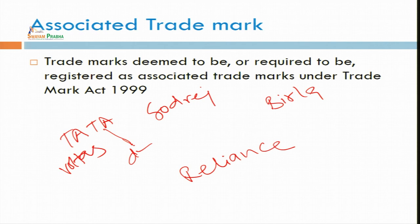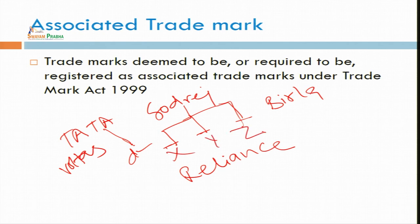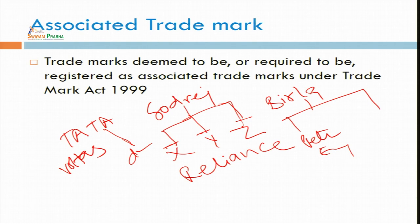Godrej deals with furniture and other types of things, so there must be some associated trademark X, Y, Z attached to the main company. Birla — Peter England is also of Birla, and Peter England is an associated trademark attached to the main trademark. Maruti Suzuki is the main trademark, but Desire, Ritz, Celerio, or Alto — they are the associated trademarks attached to the main trademark.